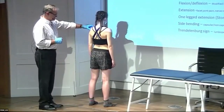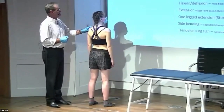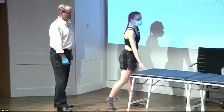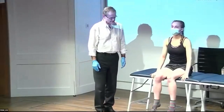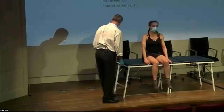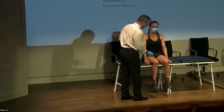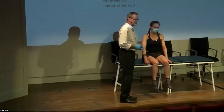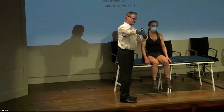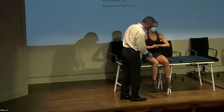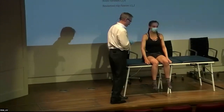That concludes the standing exam. For the sitting exam, the patient sits well back on the couch. The first test is the knee jerk reflex (L3/4). Natasha's reflexes are not particularly good, so you can facilitate them by asking the patient to clasp hands together and pull — that sensitizes the reflexes, which is useful since a surprising number of people have poor reflexes.